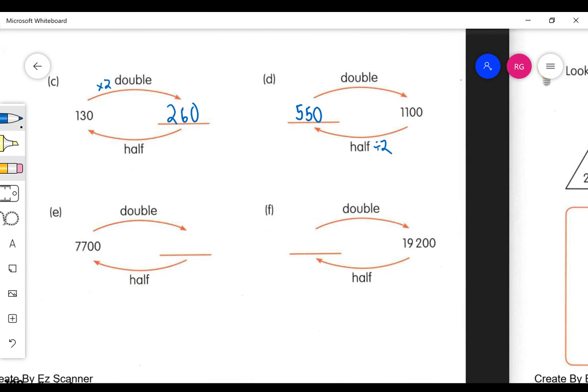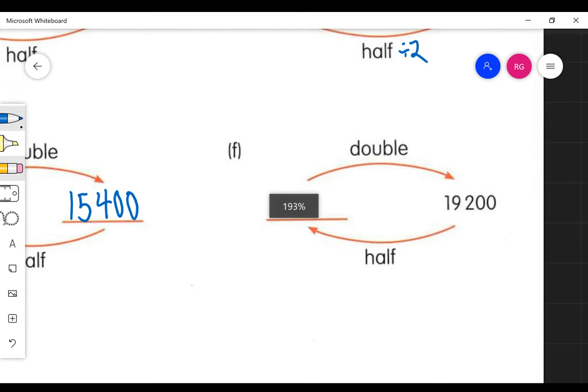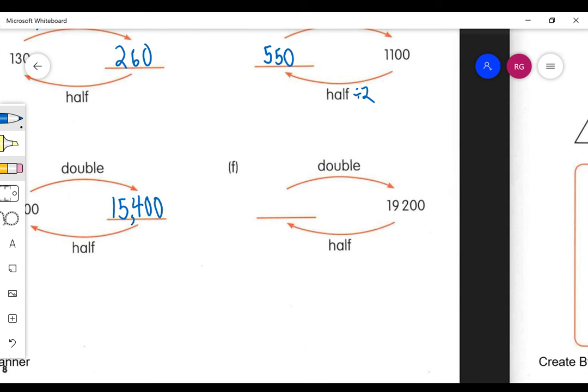And then the next one says to double 7,700. Well, what do you get? That's 7,700 times 2. If you work that out, you should get 15,400. And the last one here, don't forget our comma.